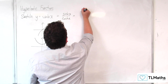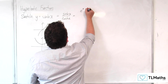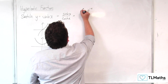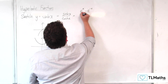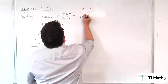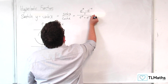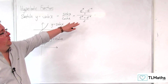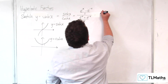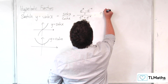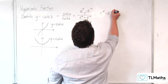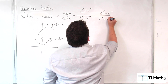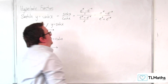And we can write that as e to the x minus e to the minus x over 2, over e to the x plus e to the minus x over 2. The halves cancel, so we can write that as e to the x minus e to the minus x, over e to the x plus e to the minus x.